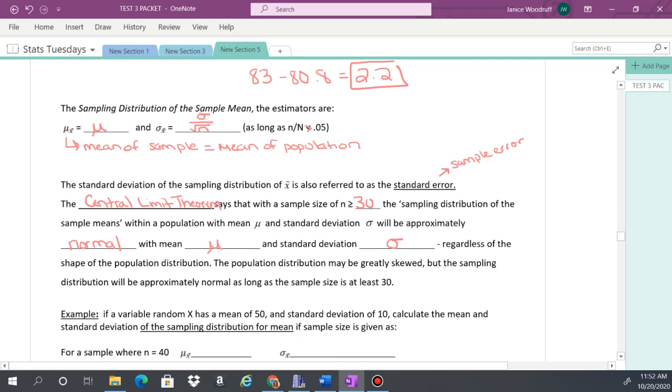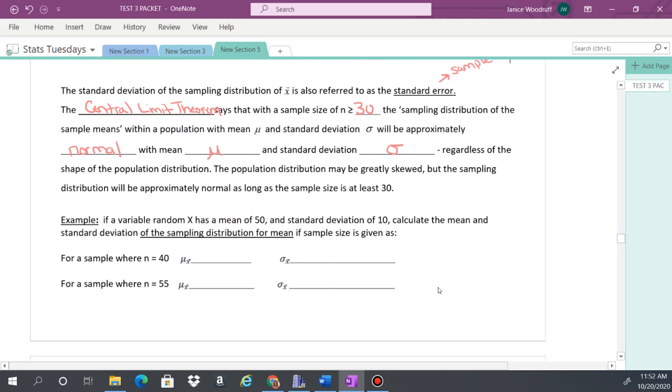A quick example here. We have a random variable X with a mean of 50 and a standard deviation of 10. We can calculate the mean and standard deviation of the sampling distribution for the mean if we have a different sample size. So I wasn't able to get the entire population, we had to use a sample. So I want to find the mean and the standard deviation of the sample based on the data I'm given. For a sample with a sample size of 40, the mean is still 50, because as long as our sample size is greater than 30, the mean will stay the same.